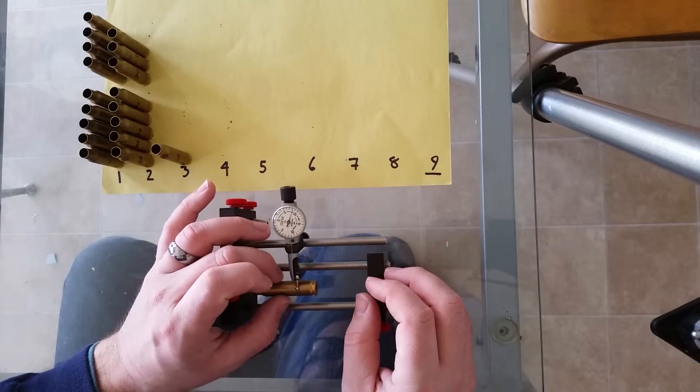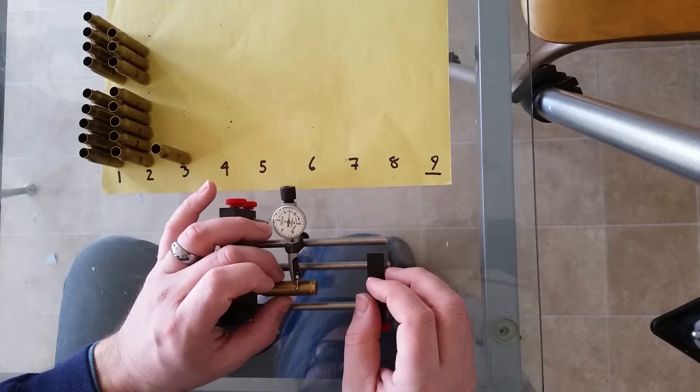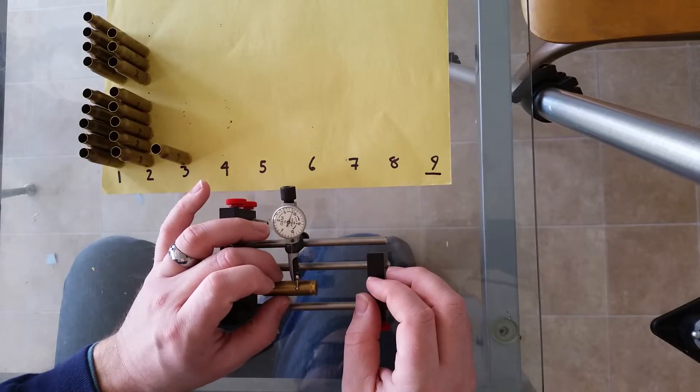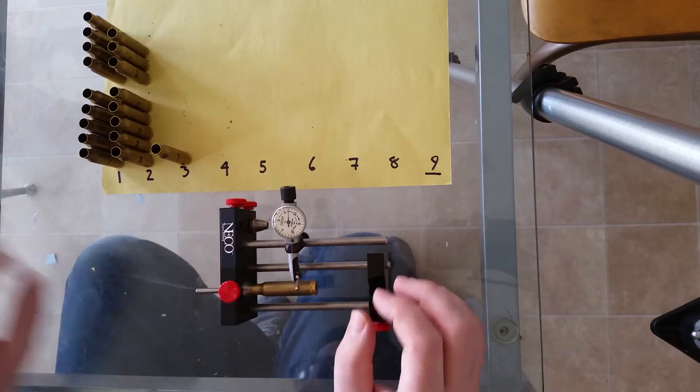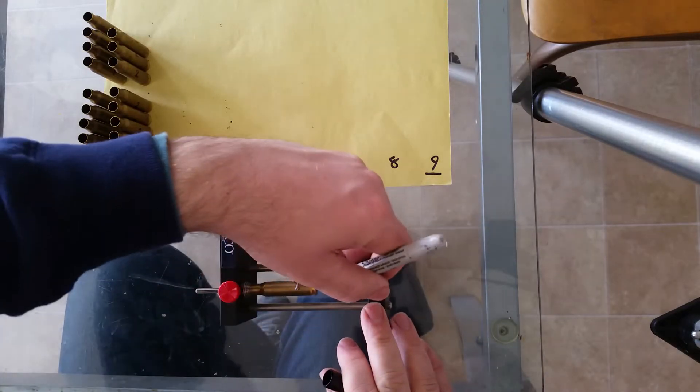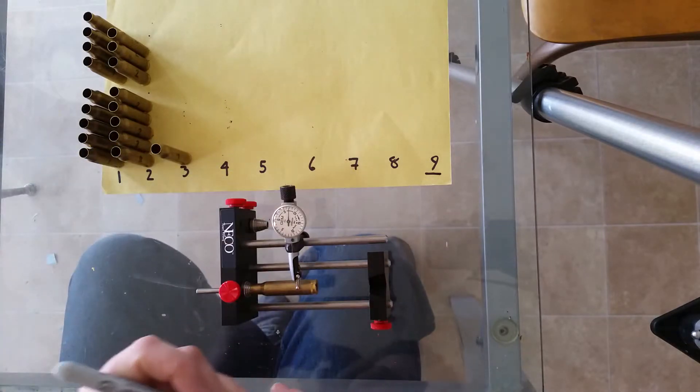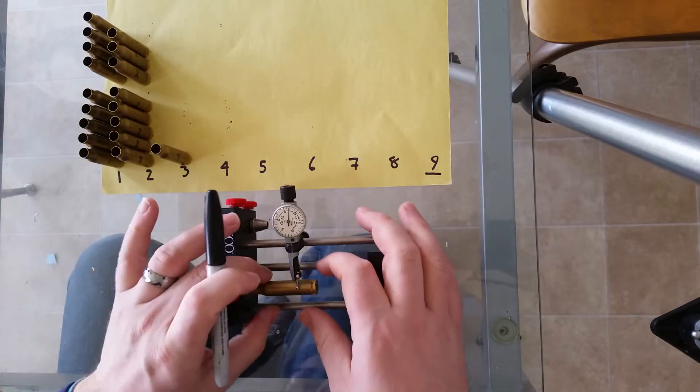So this one has about 2,000 total indicator runout. You want to mark the low spot, and what Mr. Tubbs talks about is line that up with your locking lug to handle recoil.